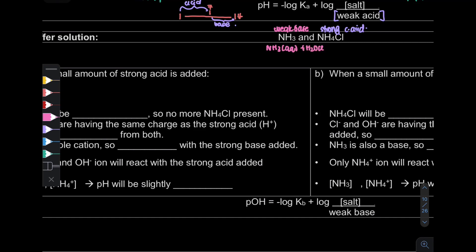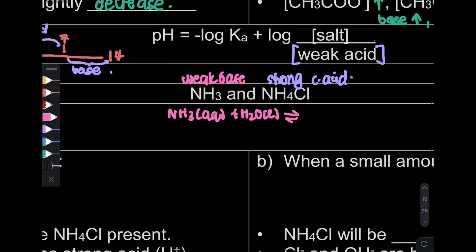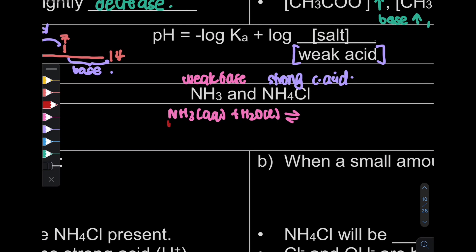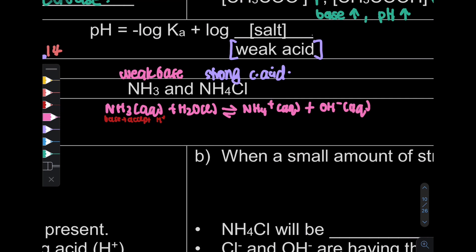So first, I'm going to write down the equation. NH3 will react with water. Since it is a base, a base will accept hydrogen — accept H+. So this is your acid which will donate H+. When it accepts H+, NH4+ is formed, and what we have left is OH minus. That is for your weak base equation.